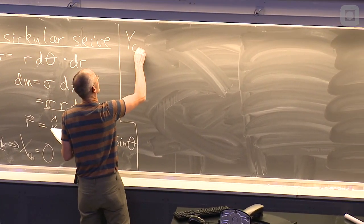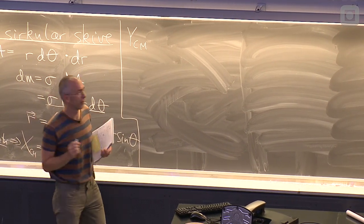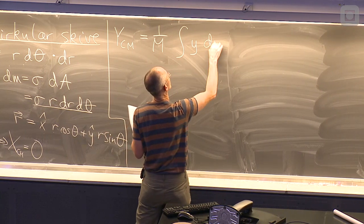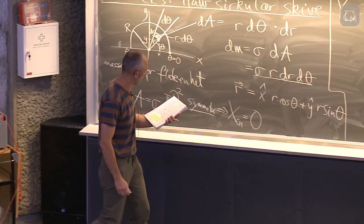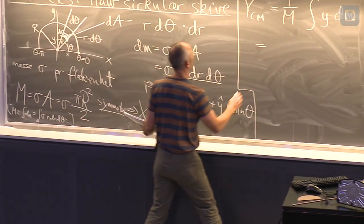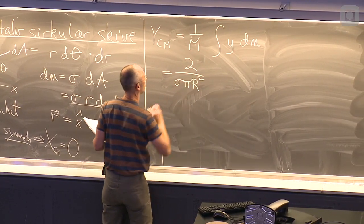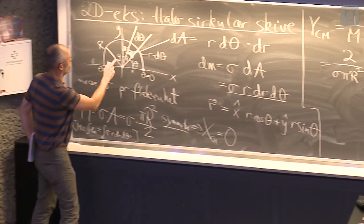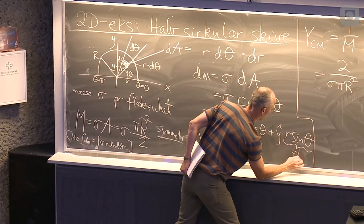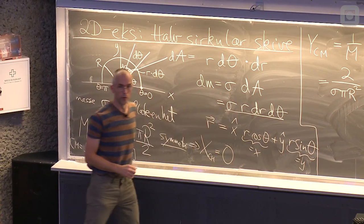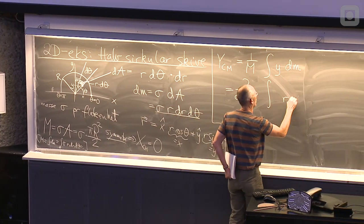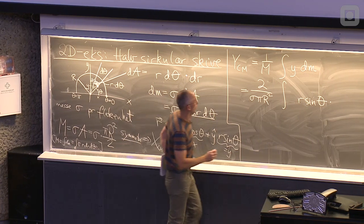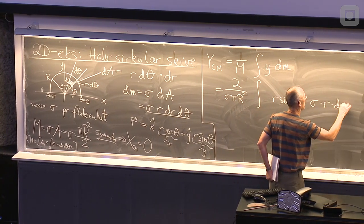OK, så vi står igjen nok en gang med å bestemme y-koordinaten, y-komponenten av massesenteret, som da må være integralet av y-komponenten av r-vektoren, ganger med dm. Sånn som i starten. En over massen, det skulle bli to delt på sigma pi r i annen. Integralet. I, det er den. Det er x, men den trenger vi ikke å bry oss om. dm, den står der, uttrykt i polar-koordinater. Konstanten sigma, gange r, gange dr, gange d theta.